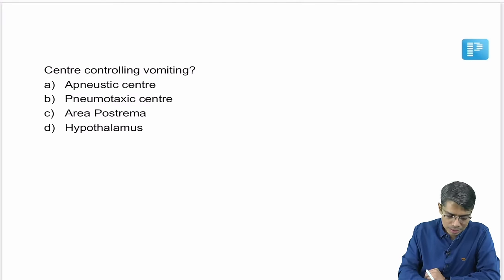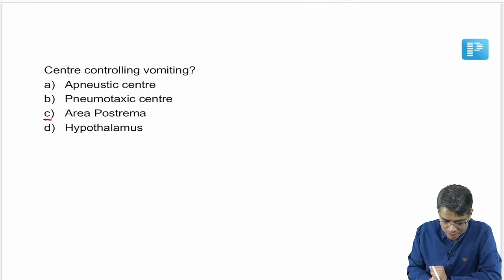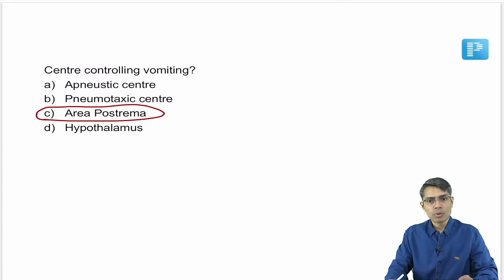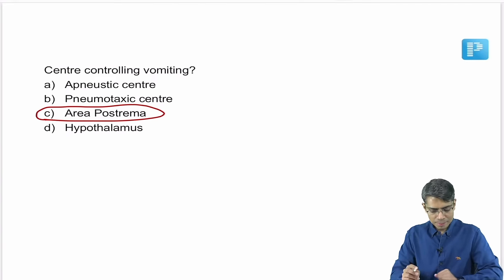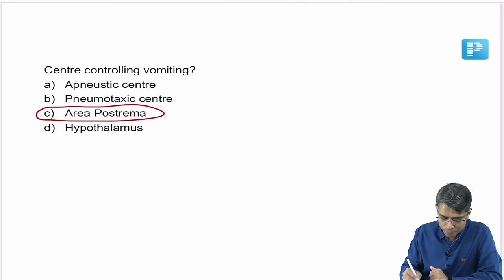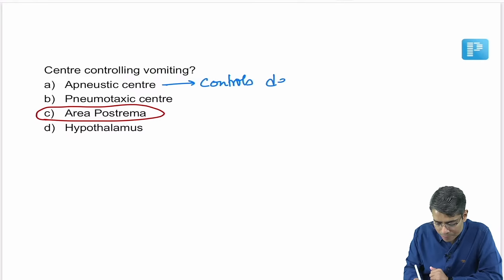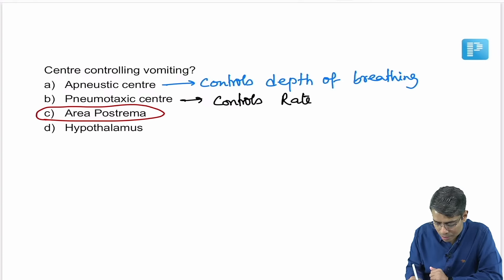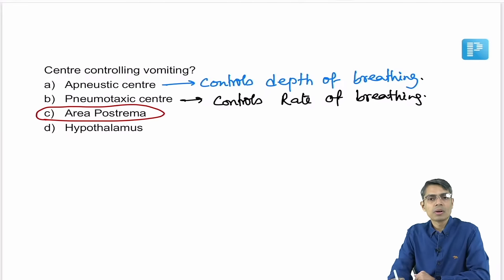Next question: centre controlling vomiting. The direct answer is area postrema, which is a circumventricular organ. Additionally, the apneustic centre controls the depth of breathing and the pneumotactic centre controls the rate of breathing — these two centres control respiration.